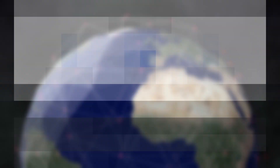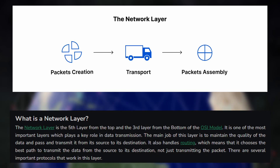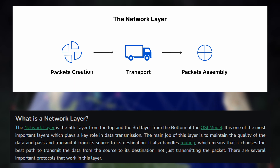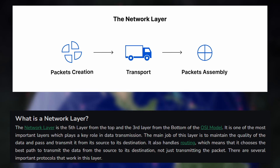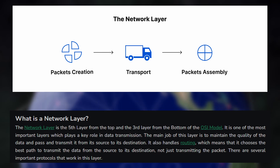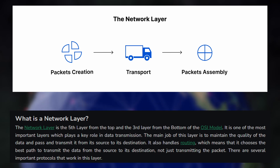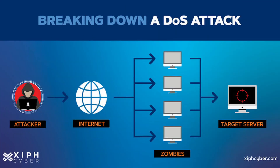Layer three is the network layer, where IP addresses come into play. This layer is responsible for determining the best path for data to travel between different networks, using routers. Think of this layer as the post office, figuring out how to deliver data packets to their correct destination. IP spoofing and DDoS attacks are common threats at this layer, so securing routing protocols is critical.